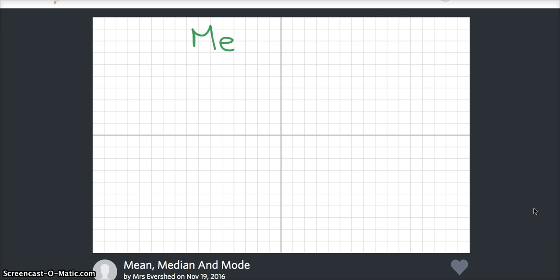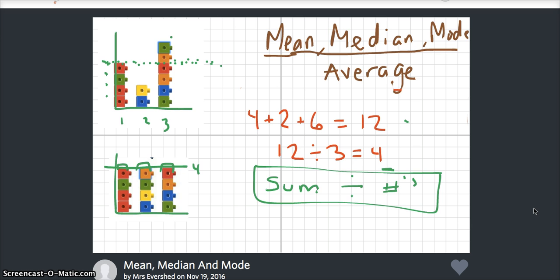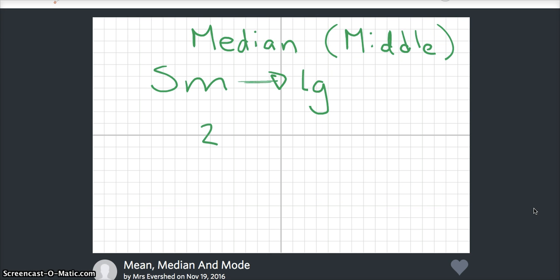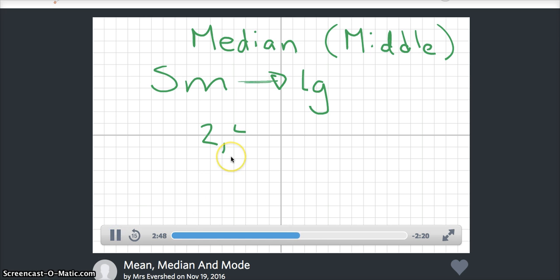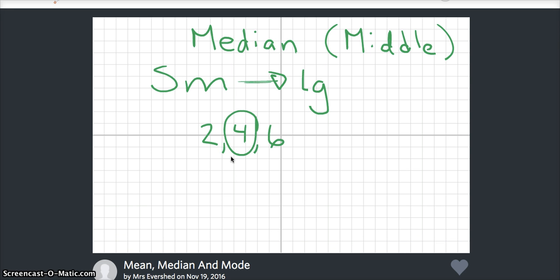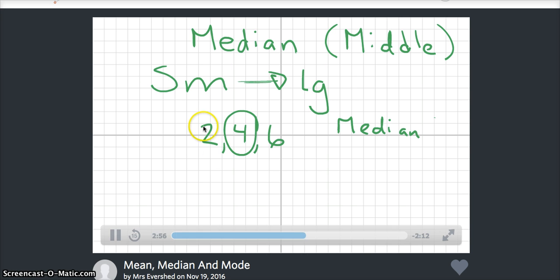If we want the median, the median average is the middle of all the data. So we have to arrange our data from smallest to largest. And in this case, we only have three pieces of data. So a 2, 4, and 6. And our middle number is 4. So our median is 4.